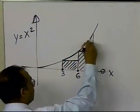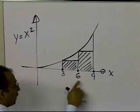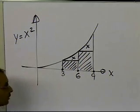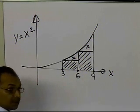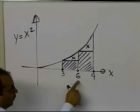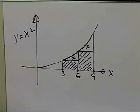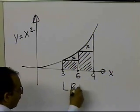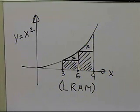You can see there is some error associated with the area calculated from 3 to 9, because we're not accounting for the parts of the curve above the rectangles. If we drew infinite rectangles from 3 to 9, we would get the exact value of 234, but in numerical methods you cannot draw infinite rectangles. So you draw a finite number — this is called LRAM, the left-hand Riemann sum, from integral calculus.